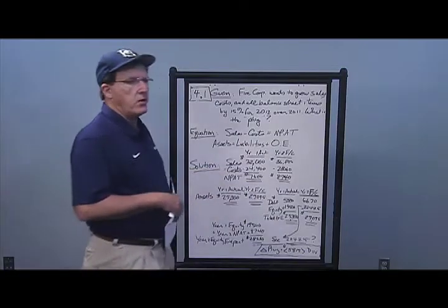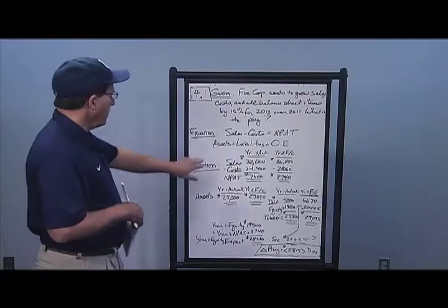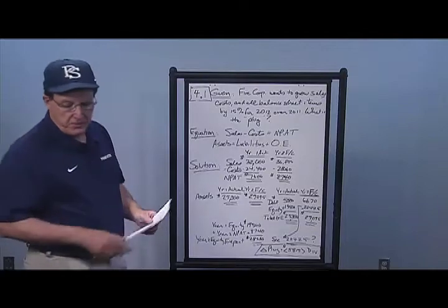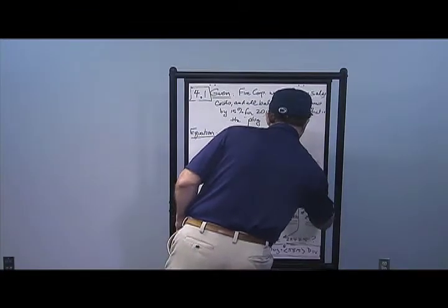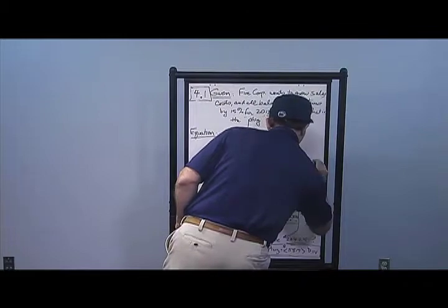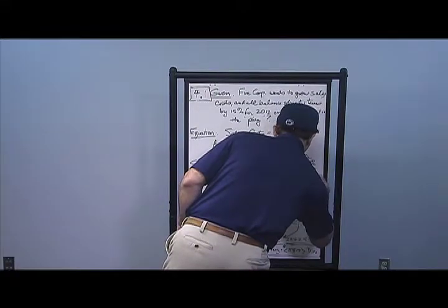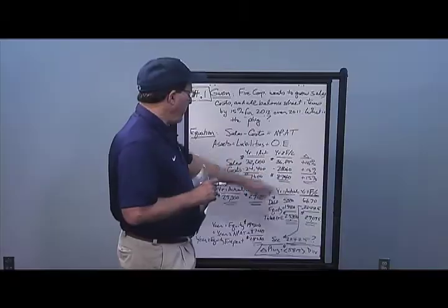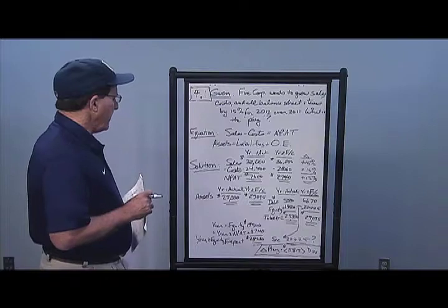First, I take my income statement items and multiply them by 15%, so all items are up delta plus 15%. I get a year two net income of 8,740; sales of 368; and costs of 2,806. All I do is multiply everything in column one by 1.15.